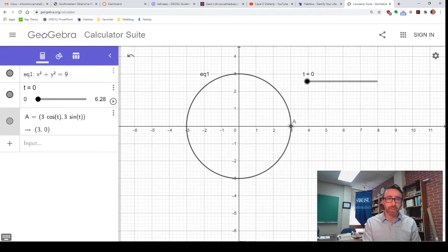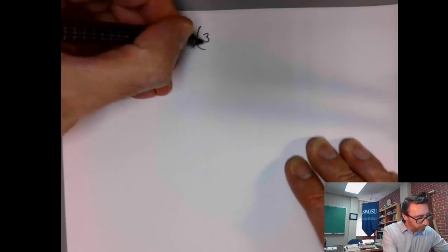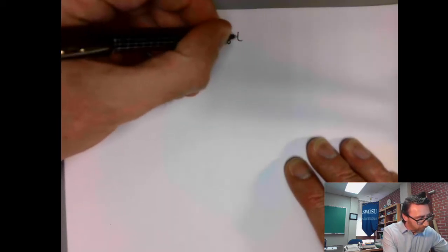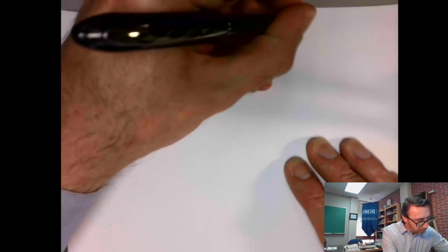Let me switch over to the document camera. So what I want to do here is to understand why the coordinate functions that we use lie on that circle. So we have 3 cosine t, 3 sine t.